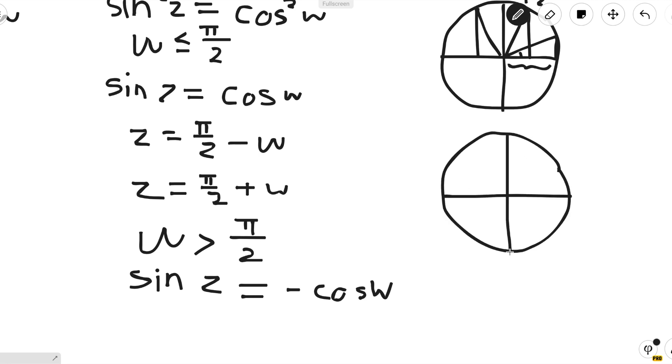Again, we draw the unit circle and we pick a point w. Cosine of w would just be negative of the bottom leg of this triangle, which means that -cos w is just the length of that triangle. That means that when sin z = -cos w, z would be these two values.